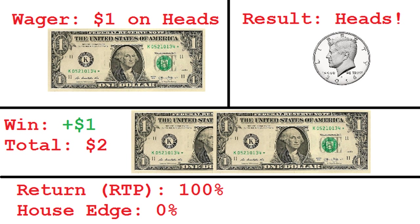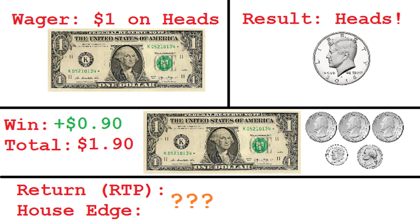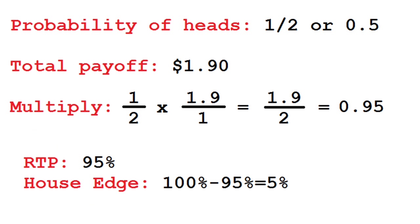However, what if I only pay you $0.90 for each $1 wagered for a correct guess? To calculate the RTP, we must find the probability of a win. The odds of a winning bet on heads is 1 over 2, or 0.5. Multiply this by your total payoff of $1.90, which includes your original $1 bet plus the $0.90 in winnings. The result is 0.95, which translates to a 95% return, or a house edge of 5%. Every dollar wagered in the long run will lose $0.05 to the house — this is how the casino makes its money.